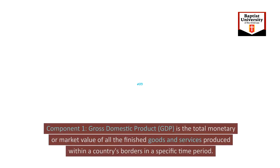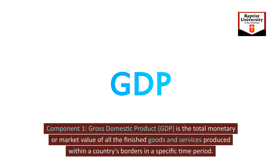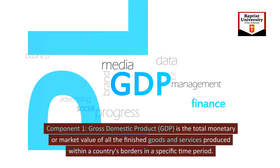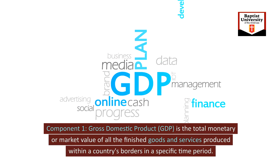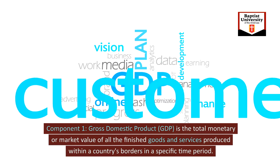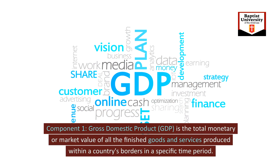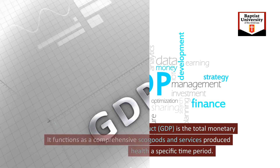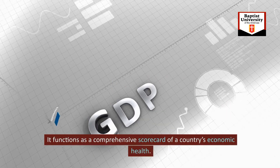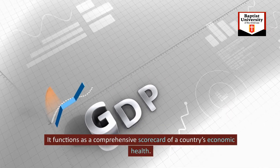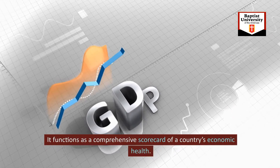Component 1: gross domestic product (GDP) is the total monetary or market value of all the finished goods and services produced within a country's borders in a specific time period. It functions as a comprehensive scorecard of a country's economic health.